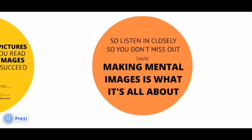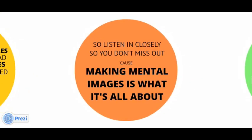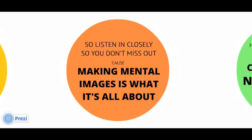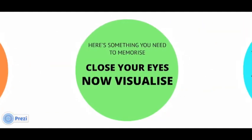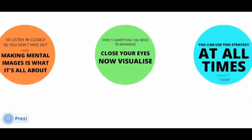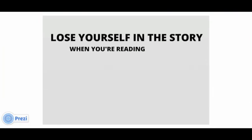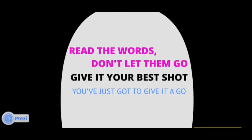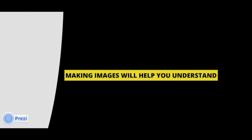So listen in closely so you don't miss out, because making mental images is what it's all about. Here's something you need to memorise: close your eyes, now visualise. Lose yourself in the story when you're reading. Read the words and let them go. Give it your best shot, you just gotta give it a go. Making images will help you understand.